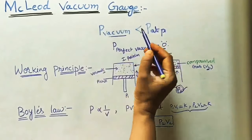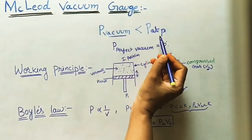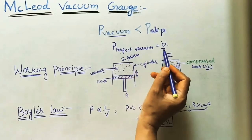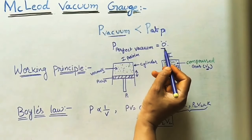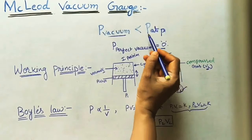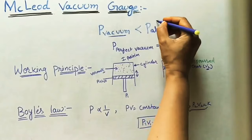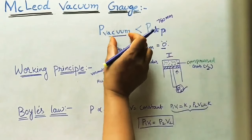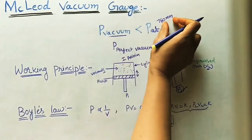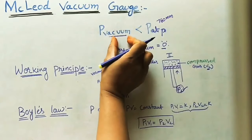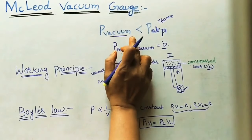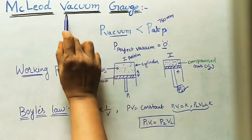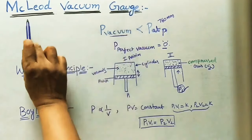Vacuum is pressure less than atmospheric pressure. Perfect vacuum is zero pressure. The atmospheric value is 760 mm, and any value less than this is called vacuum pressure. This vacuum pressure we can find accurately by using this instrument.